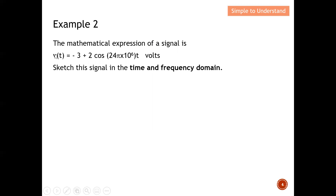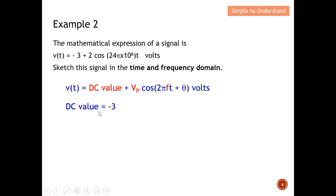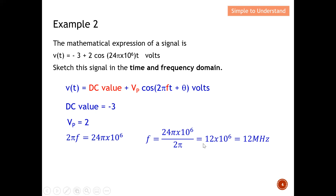In Example 2, a mathematical expression of a signal is given and we are tasked to sketch it in the time and frequency domain. Pulling the general expression for comparison, term by term: the DC value is −3, the peak amplitude Vp is 2. For the frequency, 2πf equals 24π × 10⁶, so dividing by 2π gives a frequency of 12 megahertz.